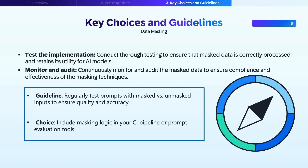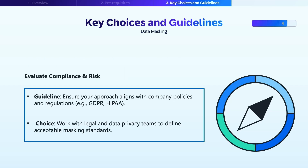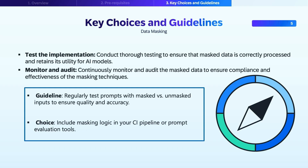Evaluate compliance and risk — ensure your approach aligns with company policies and regulations, and work with legal and data privacy teams to define acceptable masking standards. Conduct thorough testing to ensure that masked data is correctly processed and retains its utility for AI models. Regularly test prompts with masked versus unmasked inputs to ensure quality and accuracy. Continuously monitor and audit the masked data to ensure compliance and effectiveness of the masking techniques. Include masking logic in your continuous integration pipeline or prompt evaluation tools.